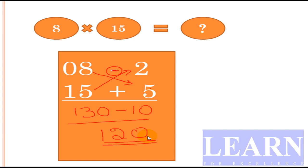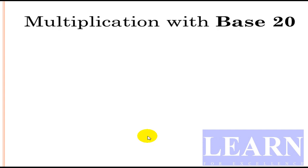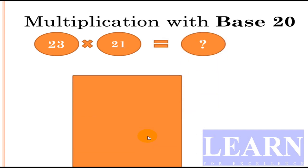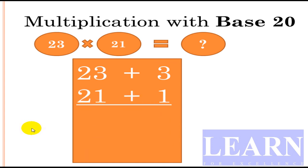Now we'll look at one more example: multiplication with base 20. We'll take 23 × 21. First, we'll write the numbers in the same format. Write 23 as 23 + 3 and 21 as 21 + 1. After writing this, we have to go with the same process. What is 23 + 1? The number is 24.